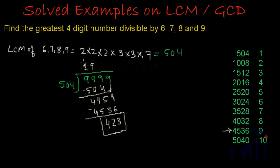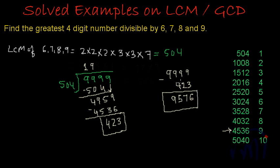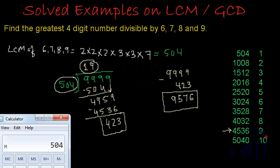So we can find the largest four-digit number in two methods. One is we subtract this 423 from 9,999: 9 minus 3 is 6, 9 minus 2 is 7, 9 minus 4 is 5, and 9. So 9,576 will be that biggest possible number which is divisible by all 6, 7, 8 and 9. Or the second way is to multiply 504 by 19 and you are going to get the same number. Let me multiply 504 by 19 and let's see what we get — yes, we get 9,576.